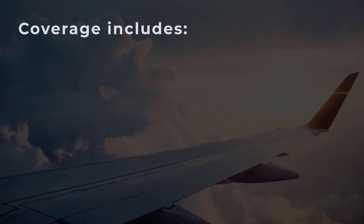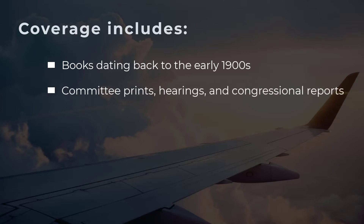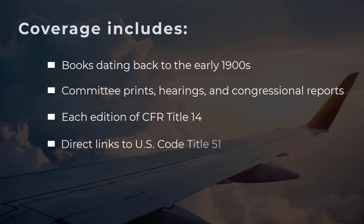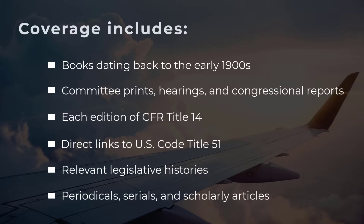This comprehensive database includes books dating back to the early 1900s, extensive government documents ranging from committee prints and congressional hearings to reports from the Congressional Research Service and Government Accountability Office, each edition of CFR Title 14 dealing with aeronautics and space, direct links to U.S. Code Title 51 dealing with national and commercial space programs, legislative histories showcasing the journey of a bill as it becomes a law with all its changes, additions, deletions, and various legislative hurdles, and finally periodicals, serials, and a curated list of scholarly articles dedicated to aviation and space matters.